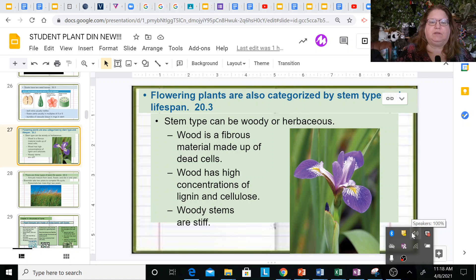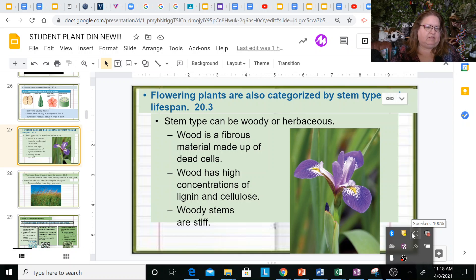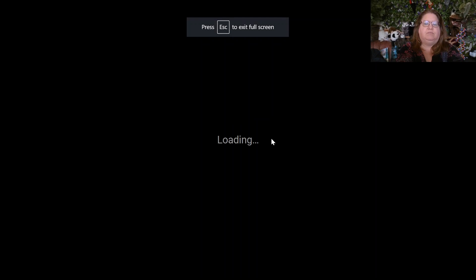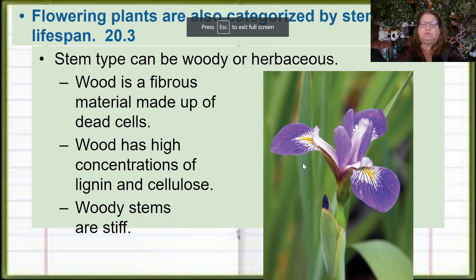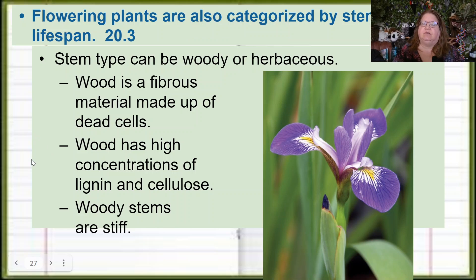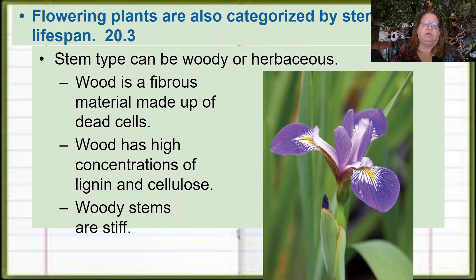Good morning. Today we're going to learn about one last way that plants are categorized, and then we're going to go over some very basic structures of plants, the tissues found in plants and the cells found in plants. This is found in chapter 20, section 3.